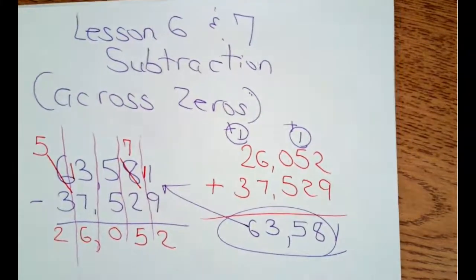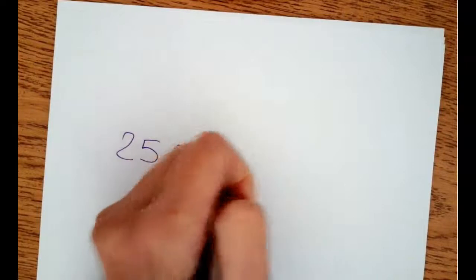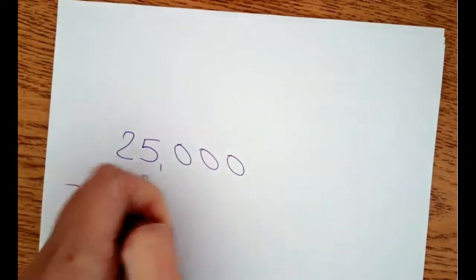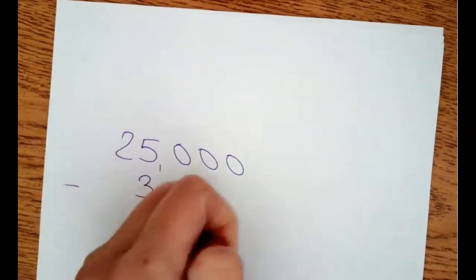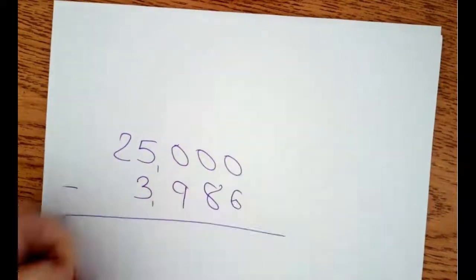All right, let's do a problem across zeros. Because again, guys, it is super easy if you take your time. So we're just going to make this easy one. Twenty-five thousand minus three thousand, nine hundred, eighty-six.